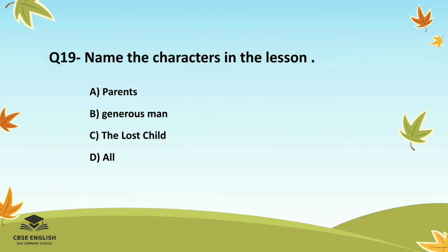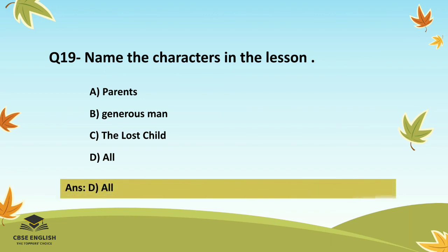Question number nineteen: Name the characters in this lesson. Options are: parents; generous man; the lost child; or all. The correct answer is all.